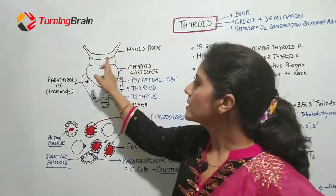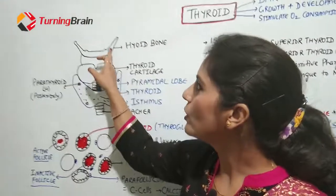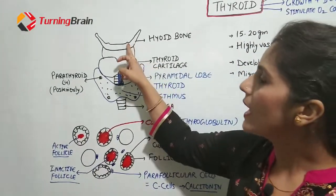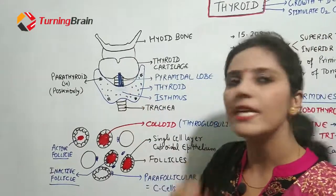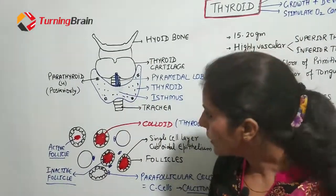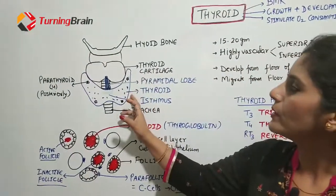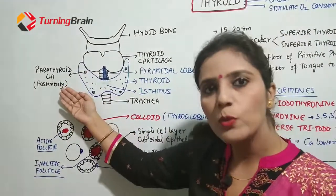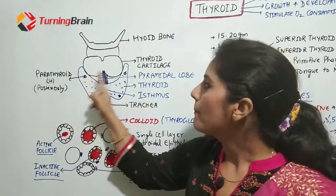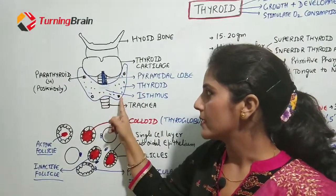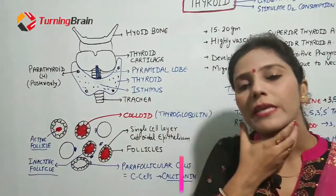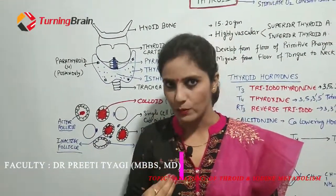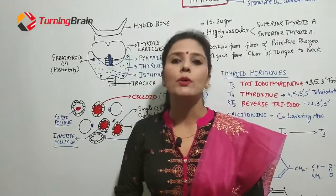If you look at the structure of the neck, there is the hyoid bone and then there is the thyroid cartilage. This gland is under the hyoid bone and thyroid cartilage. One important thing is that posterior to this gland are the four parathyroid glands. So the thyroid gland has four parathyroid glands located posteriorly, which are also very important.